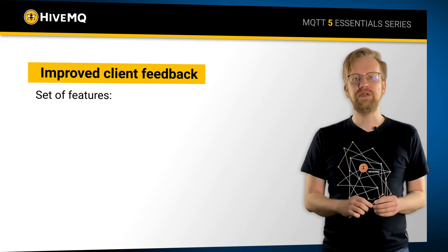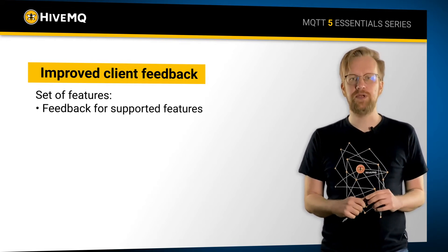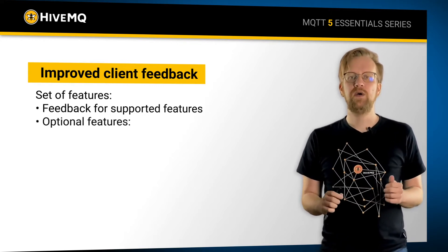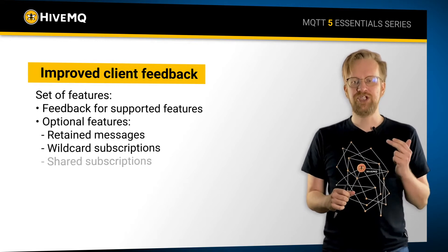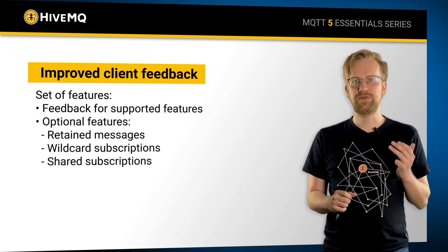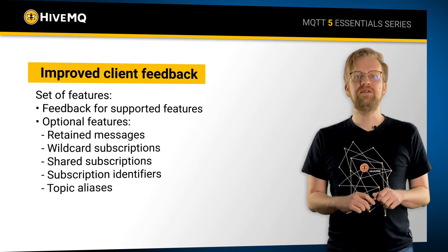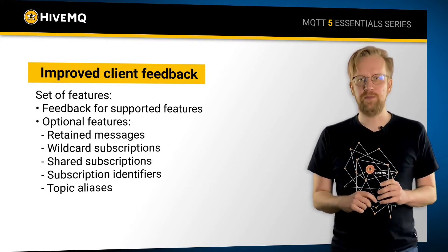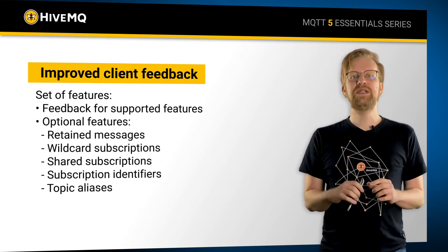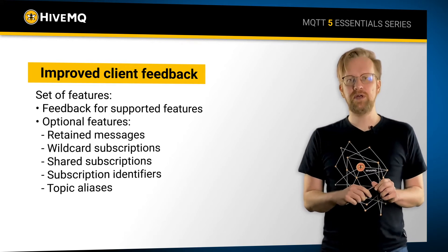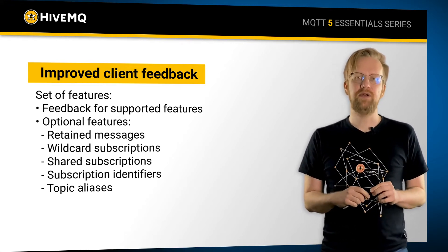First off, an MQTT broker can now let the client know about what kind of features it supports. Optional features are retained messages, wildcard subscriptions, shared subscriptions, subscription identifiers, and topic aliases. You might have noticed that some of these features already were part of MQTT 3 and are now optional. Consider this when choosing your MQTT broker, and make sure that all the features that you need are also supported by the broker you choose.